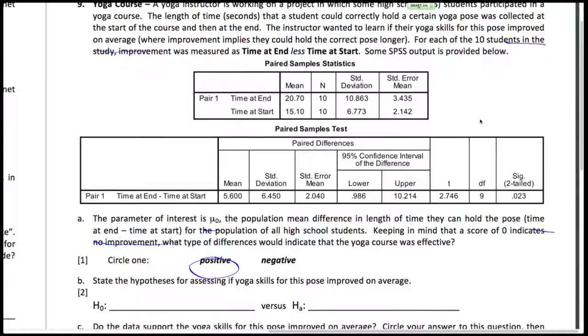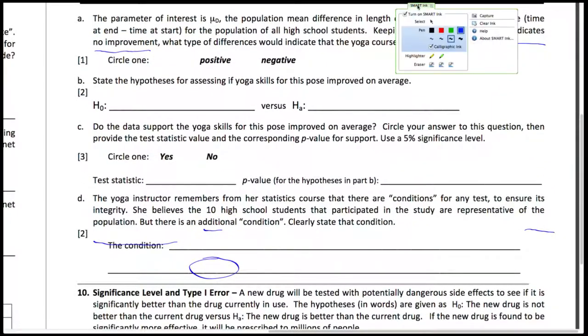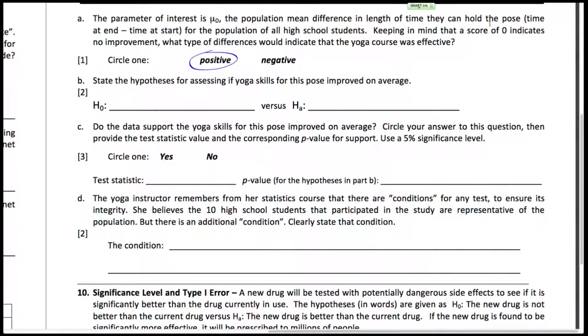Now we want to state the hypothesis for assessing if the pose improved on average. We already have our parameter, it's just a mean difference, and we want our mean difference to be positive, right? That's what side that we're interested in. We're not interested in if people actually decreased their pose time. Now we want to see if the data support this.